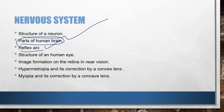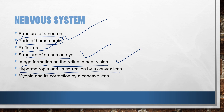Next in the nervous system comes the human eye. The structure of the human eye diagram is very important. Then image formation on the retina in near vision — I have already discussed this in my videos on the sense organ eye, so please go through those if you haven't. Next comes hypermetropia and its correction by convex lens, and myopia and its correction. These are the main important diagrams covering the eye: structure, hypermetropia, image formation on the retina, and myopia with correction.